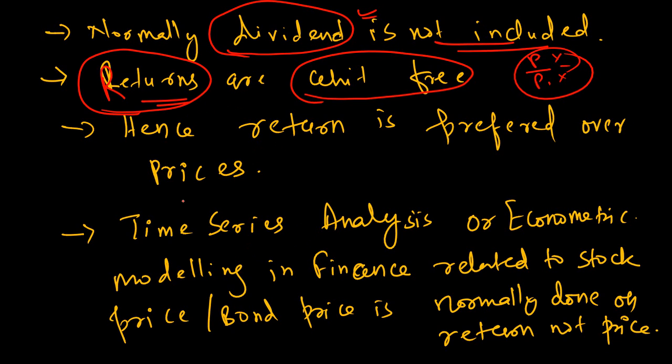Time series analysis in particular, or any econometric model for that matter, is done using the return on stock or a bond. Normally return is preferred over the stock price or bond price. It is easier to handle return, and it's also unitless.